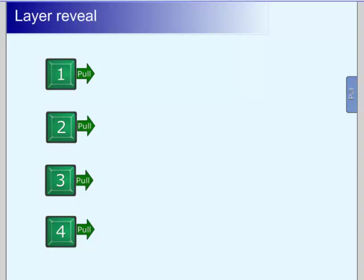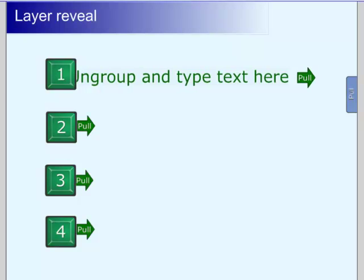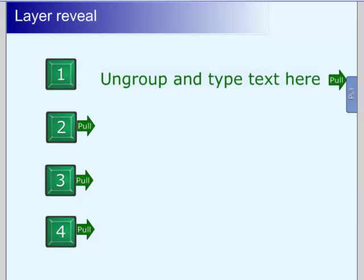Something very similar to this, they call it a layer reveal in the Lesson Activity Toolkit. I have a series of buttons and arrows that say pull. When I pull that arrow out, you can see I have a text box, and I can type something in that text box and reveal it.